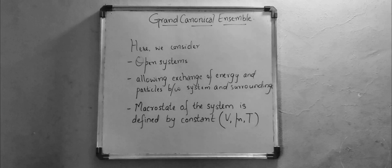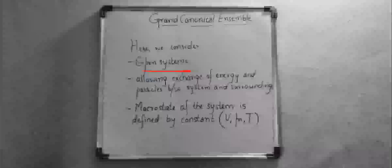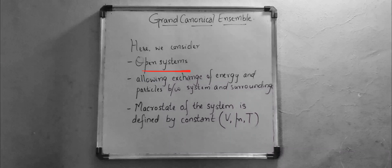In the grand canonical ensemble we consider open systems, where exchange of both energy and matter between system and surroundings is allowed. Most practical systems belong to this class. Allowing exchange of matter makes N also a variable in addition to E. In such systems, volume, temperature, and chemical potential are held constant, and at equilibrium the system has an average energy E-bar and an average number of particles N-bar.